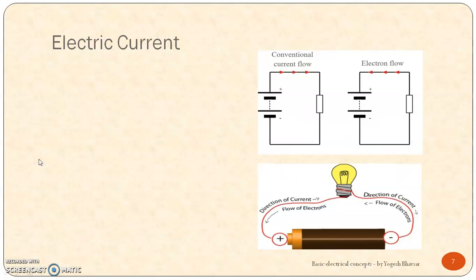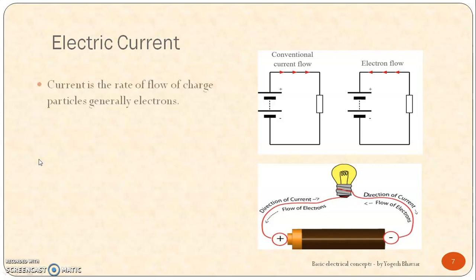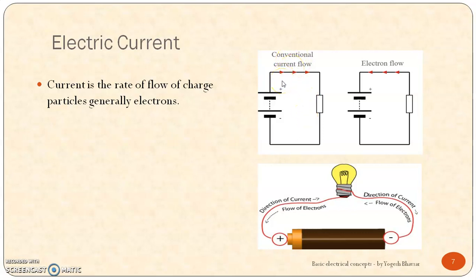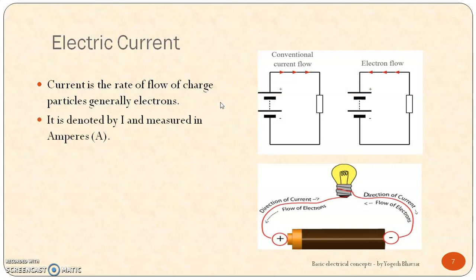The next concept is electric current. The electromotive force causes the electrons to flow in a particular direction. Current is nothing but the rate of flow of electrons, or we can say the rate of flow of charged particles — generally called electrons. If this EMF is connected to a resistor it causes electrons to flow, which means it causes current to flow. Conventional current direction is defined from positive to negative, and the electron current flows from negative to positive. The current is always denoted by I and measured in amperes.